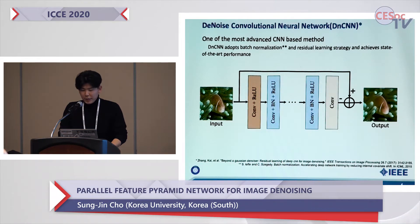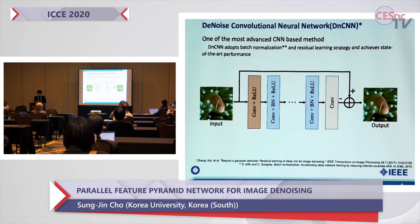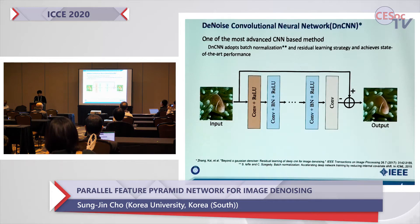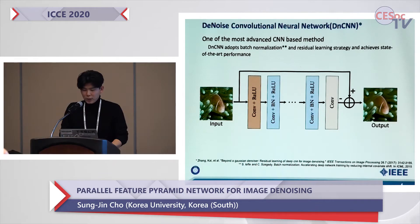Recently, deep learning algorithms have achieved significant improvements in image denoising performance. DnCNN, the Denoise Convolutional Neural Network, has been proposed. The DnCNN adopts batch normalization and residual learning and achieves state-of-the-art performance.